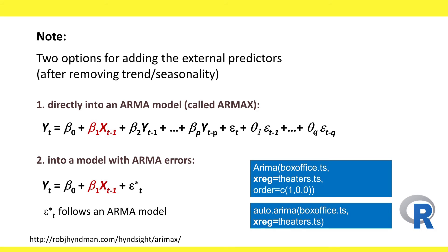Some software, such as XLMiner, does not have these options. If you find yourself in such a situation, you can use as an approximation just a linear regression with all the predictors of interest. You can then examine the residual series and, if needed, capture the remaining autocorrelation with an AR model.